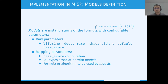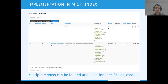The last parameter is the formula or algorithm used by the different models. In MISP you can load multiple models at once, and depending on your configuration, you can ask an IOC to have its score computed against one model or multiple models at the same time.